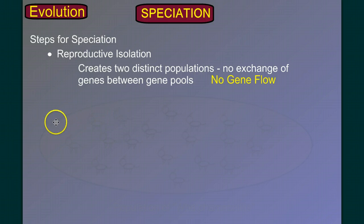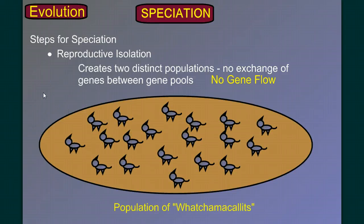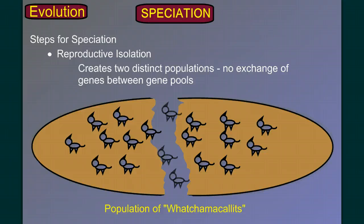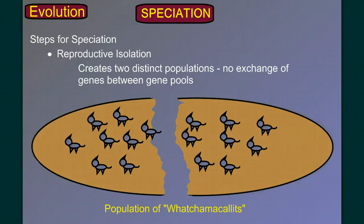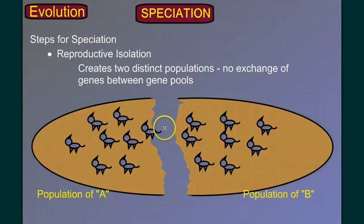I think this is best done with an example. Here's our environment, populated with a made-up animal we'll call whatchamacallits. It's one species, one population — they all interbreed and feed in this area. One day, there's an earthquake, and it opens up a canyon. A couple of whatchamacallits die as a result. But it divides our population into two: population A on one side and population B on the other. They can't get across — they are isolated from each other, can no longer reproduce, and there's no gene flow between the two distinct gene pools.